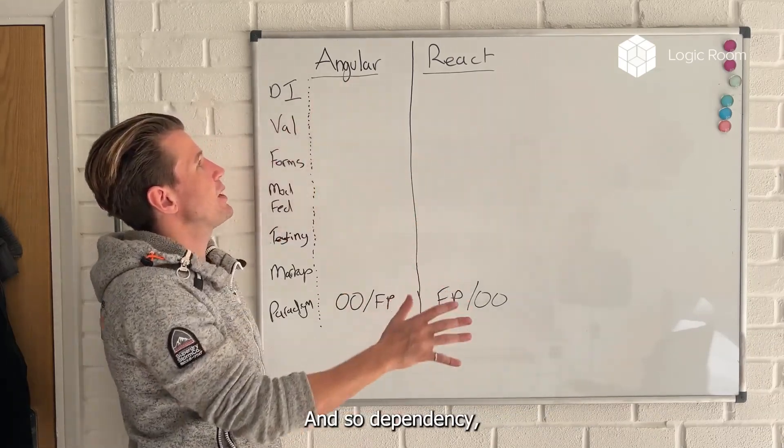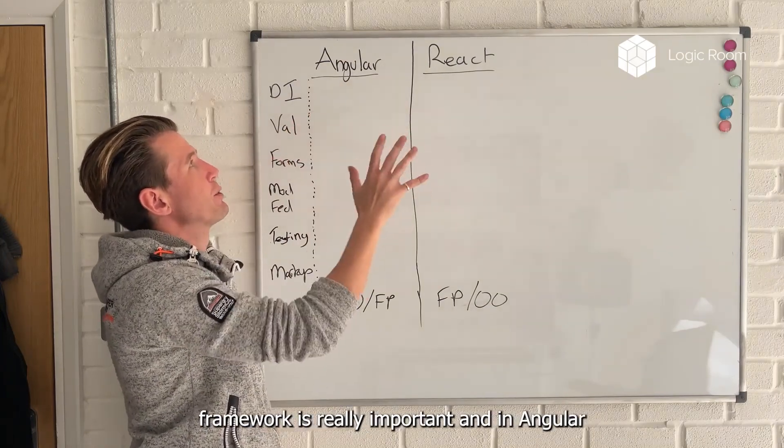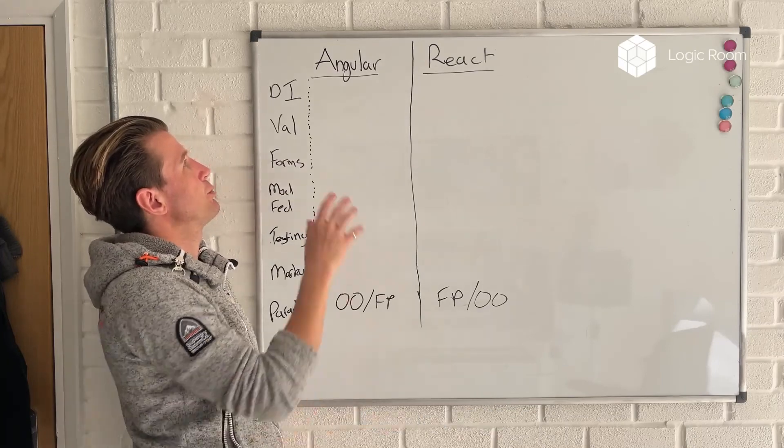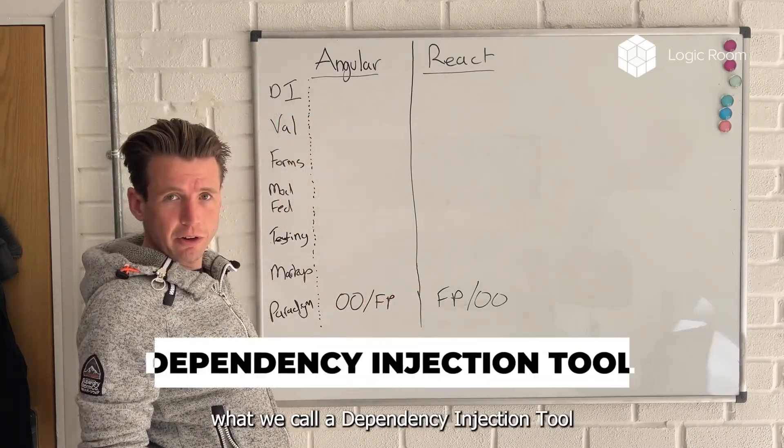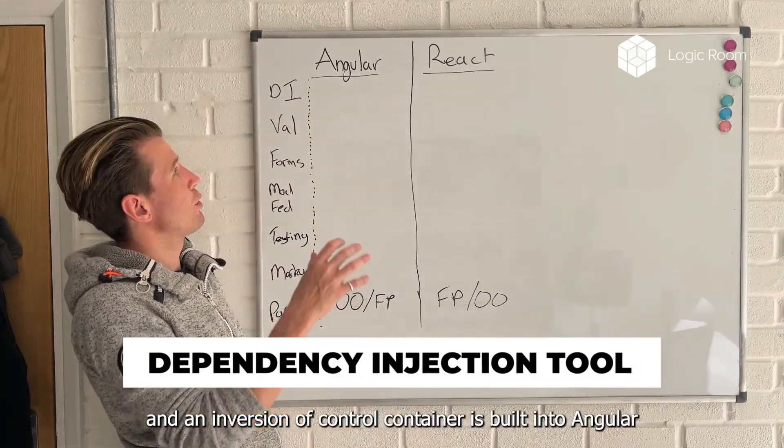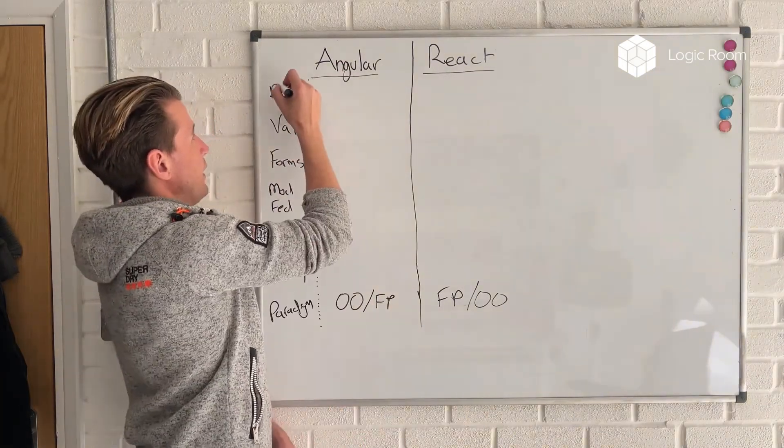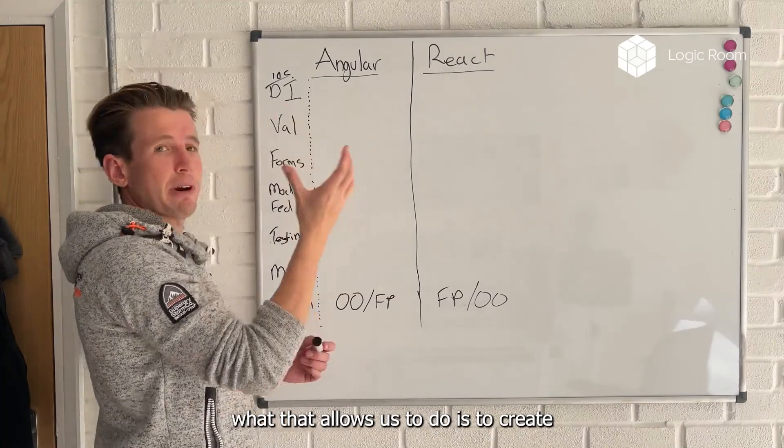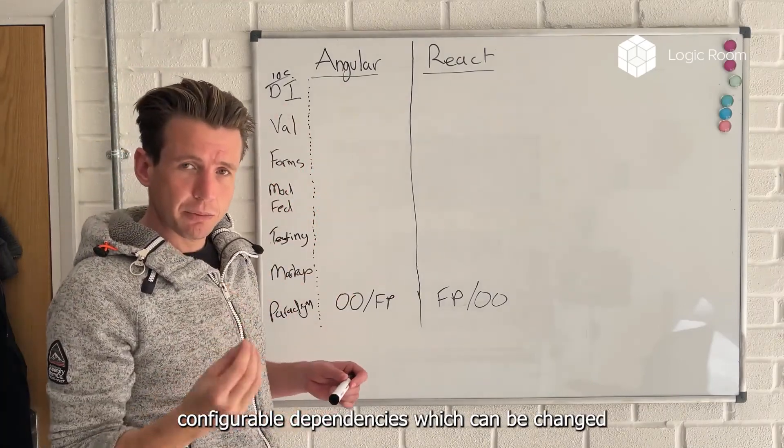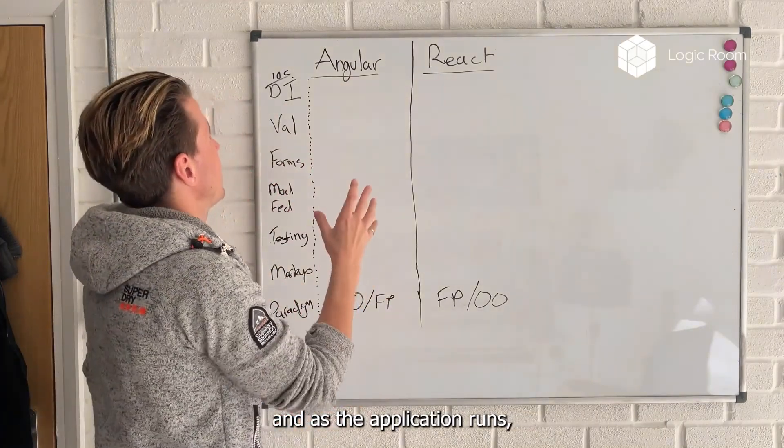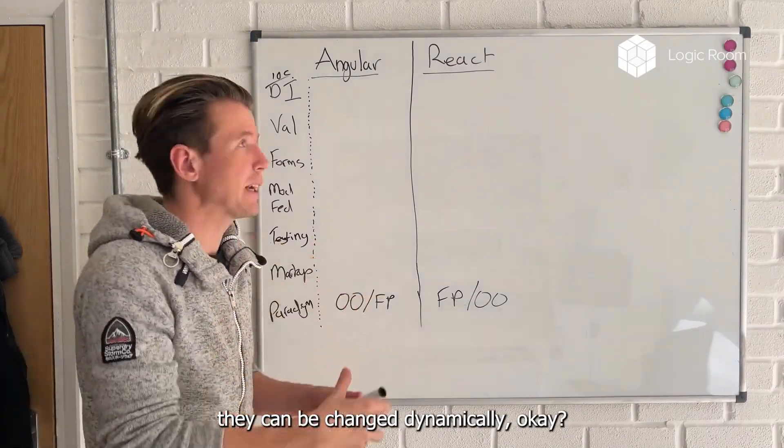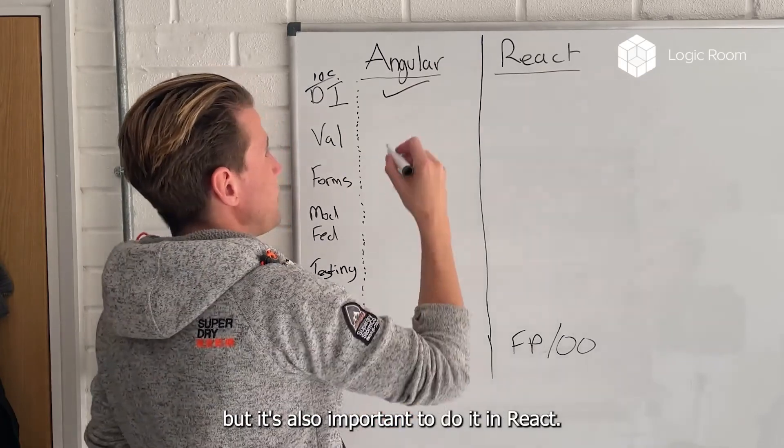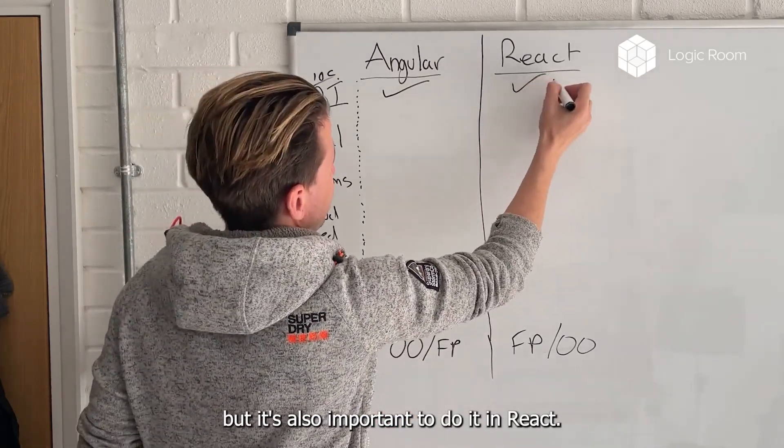We would actually want to lock the time down into a static configuration. And so the dependency management inside a framework is really important. And in Angular, you actually get an inbuilt dependency injection tool. An inversion of control container is built into Angular. What that allows us to do is create configurable dependencies which can be changed. And as the application runs, they can be changed dynamically. So we would say that Angular has that inbuilt.